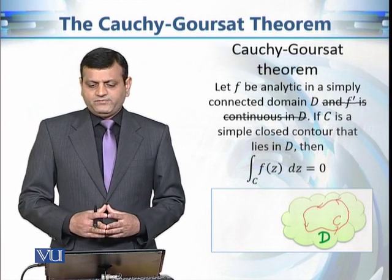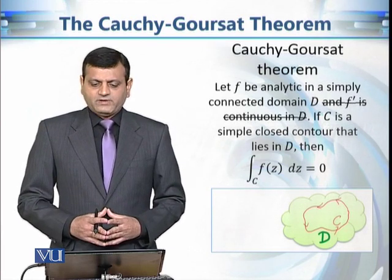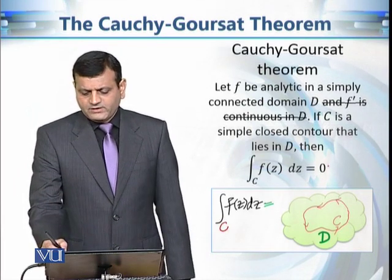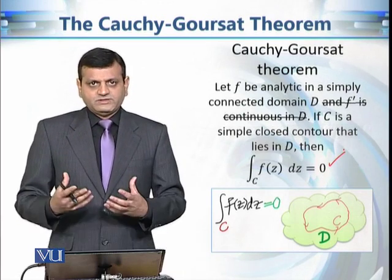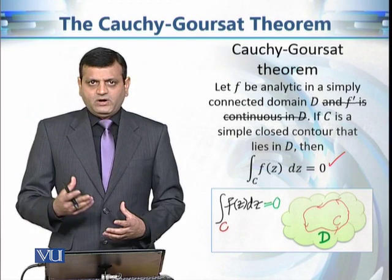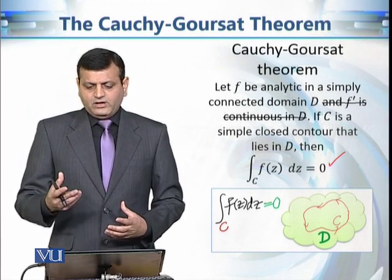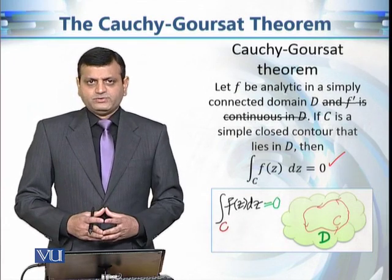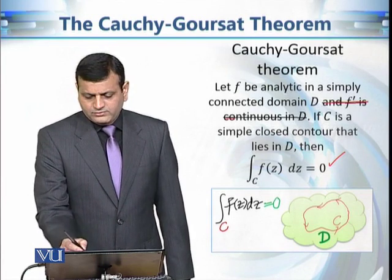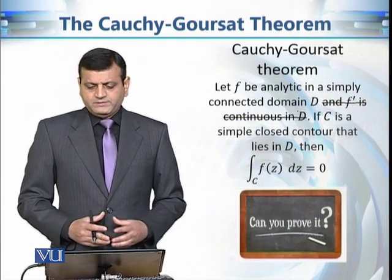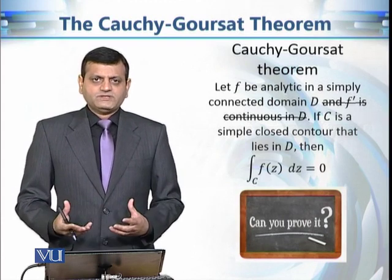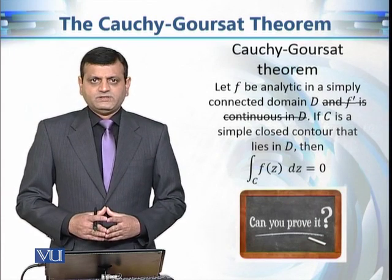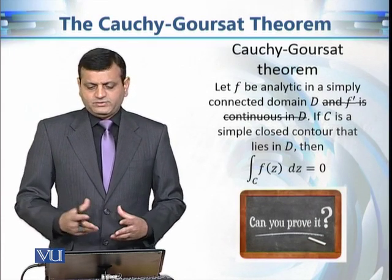The statement is the same apart from the fact that we dropped the condition that f prime is continuous in this simply connected domain d. The theorem asserts that the contour integral of this analytic function f(z) along this simple closed contour is equal to 0. We are not going to discuss the proof of this theorem; if you are interested, you can see the books of Churchill or Matthews.